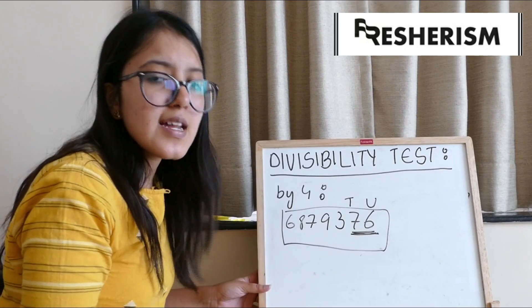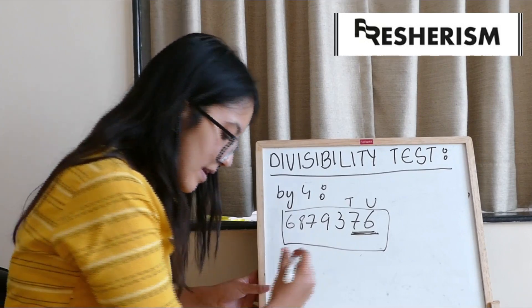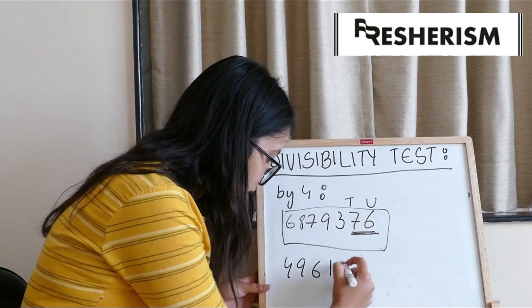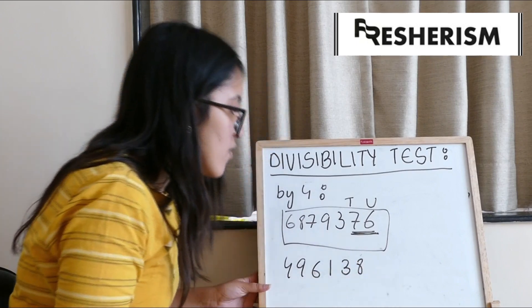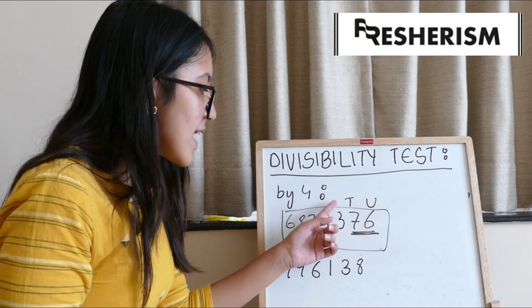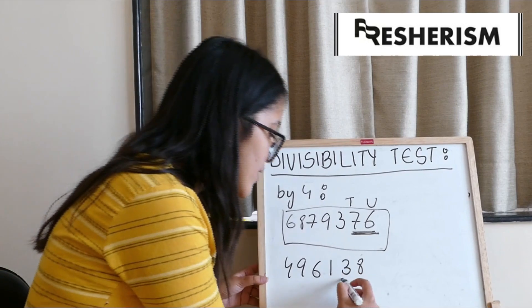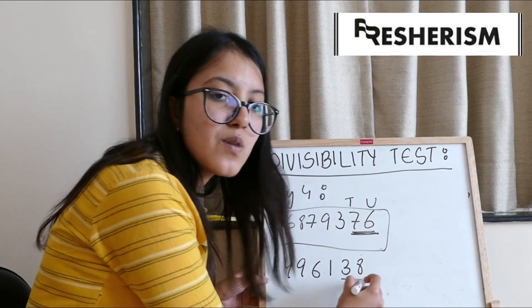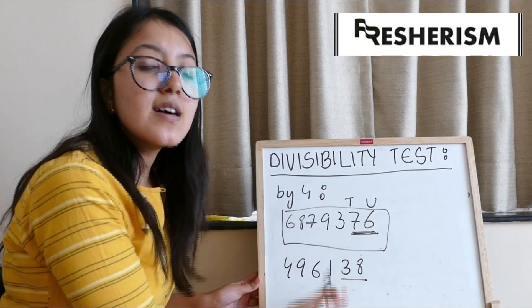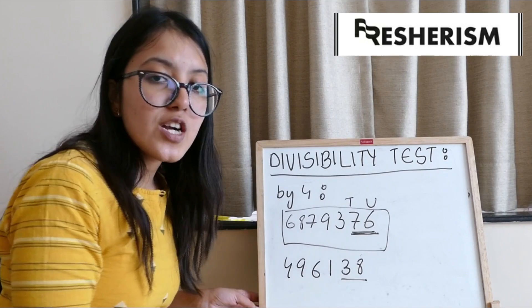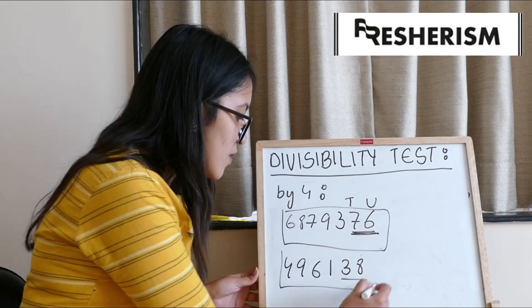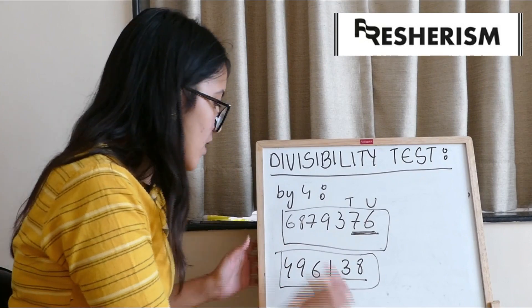Let us take another example: 496,138. The digits at units place and tens place are 3 and 8, which makes up 38. We know that 38 is not divisible by 4. Hence, this whole number would not be divisible by 4.